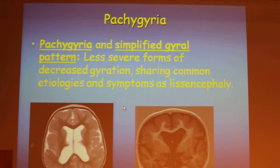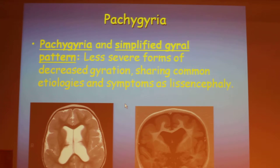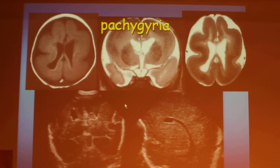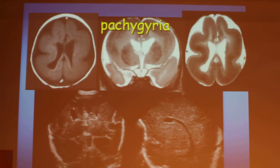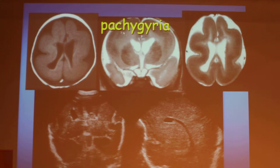Pachygyria and simplified gyral pattern are less severe forms of decreased gyration, sharing common etiologies and symptoms as lissencephaly. So we see small and fewer gyri than we should. In this case, it's almost lissencephaly.